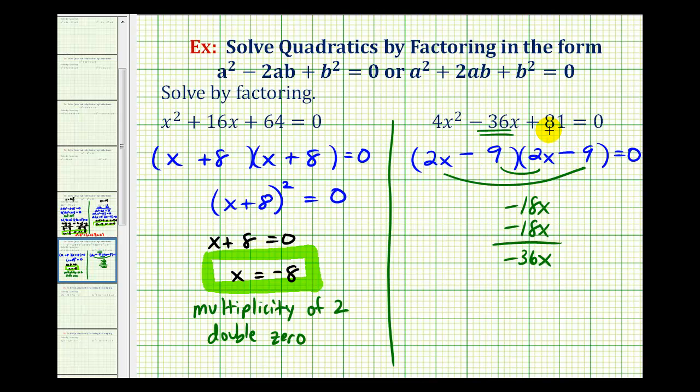So notice how when we have a trinomial, if we recognize the first term and the third term are perfect squares, we can try to factor it in this way without having to memorize another factoring formula.